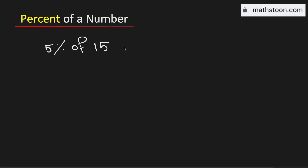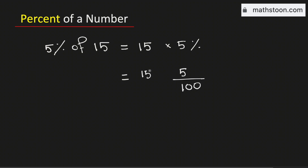To find 5% of 15, we need to multiply the number 15 by 5%. We know that 5% can be written as 5 over 100, and 15 has denominator 1.